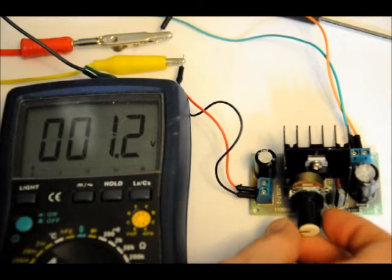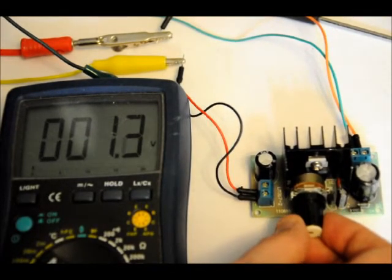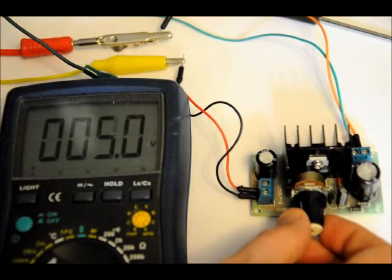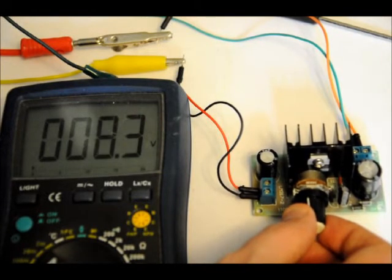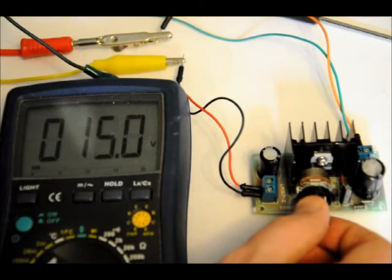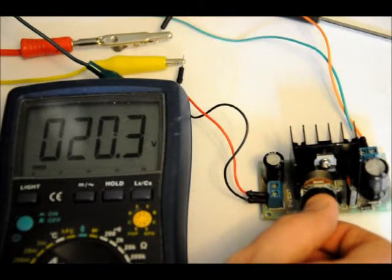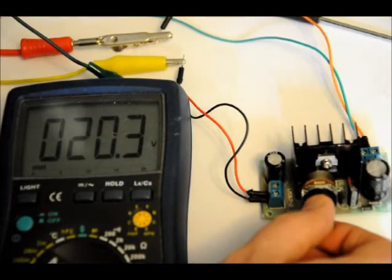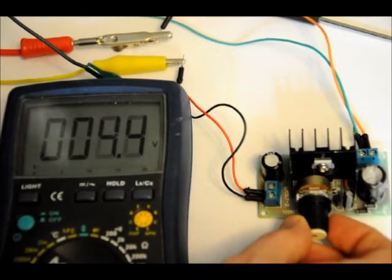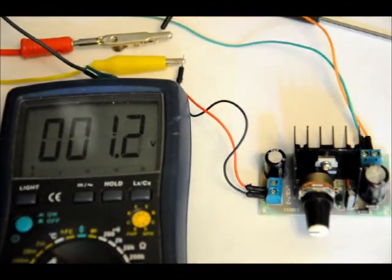So now I can take this potentiometer, turn it slowly. And I'll get between 1.2 volts and it stops right there because that's my maximum. If I had more voltage at the input, it wouldn't be a problem. I could keep turning.